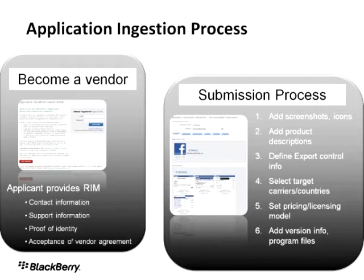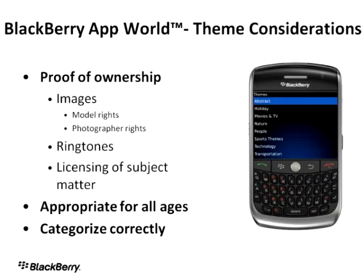From there, your theme or application will go through an approval process where RIM will have a look at it, make sure that it works, and make sure that it complies with the vendor agreement as defined on BlackBerry App World. With themes, we have a couple of additional requirements. First, if a theme is going to go on BlackBerry App World, we need you to provide proof of ownership. So if, for example, you make a theme of a particular rock band and use their images,